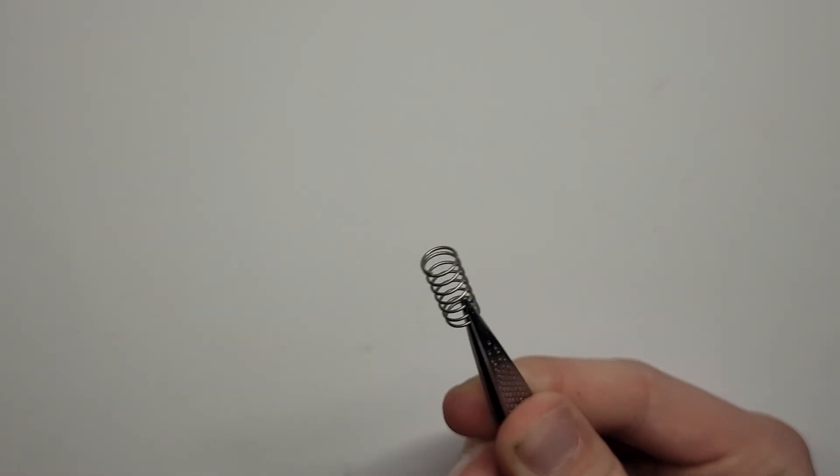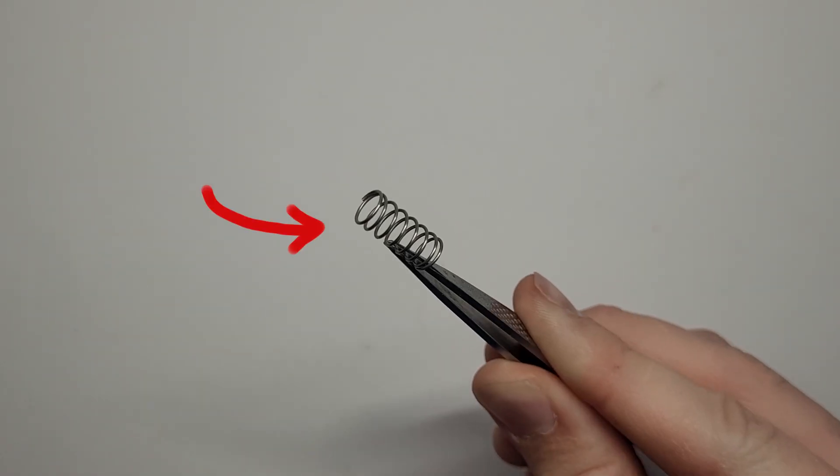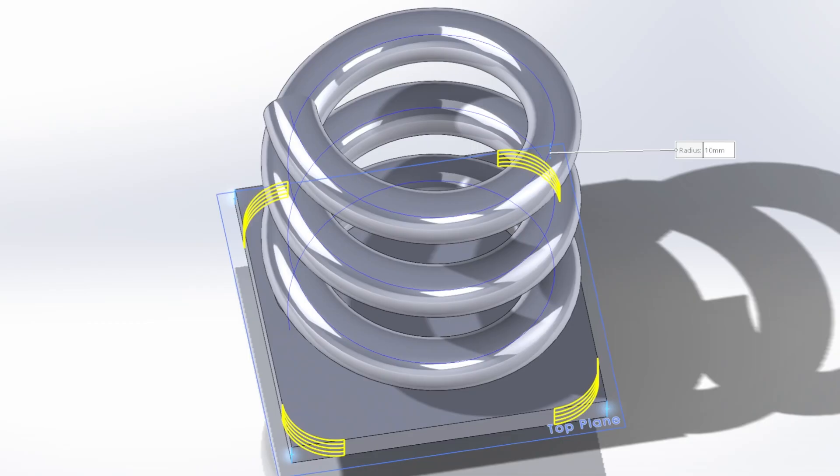For our first 3D printed spring, we're simply taking our standard issue spring here and shoving it into CAD. No extra nothing. Helix, circle, whoop, base. That's it.